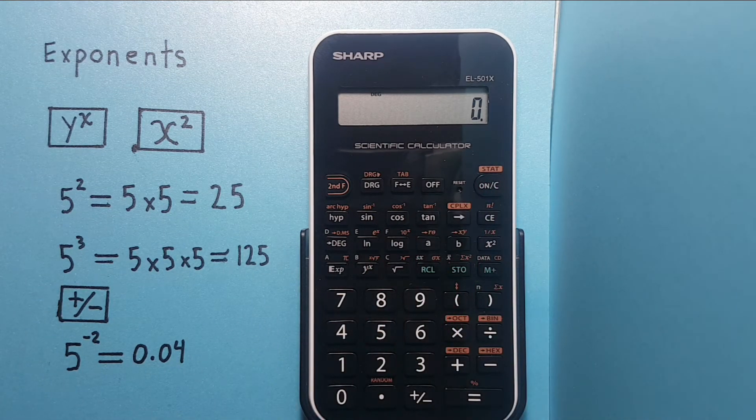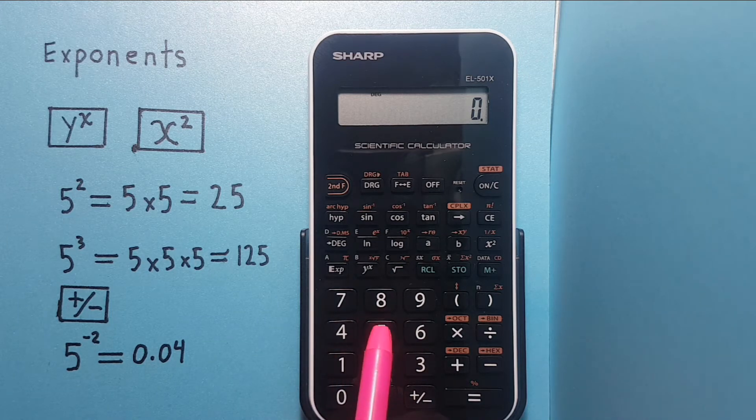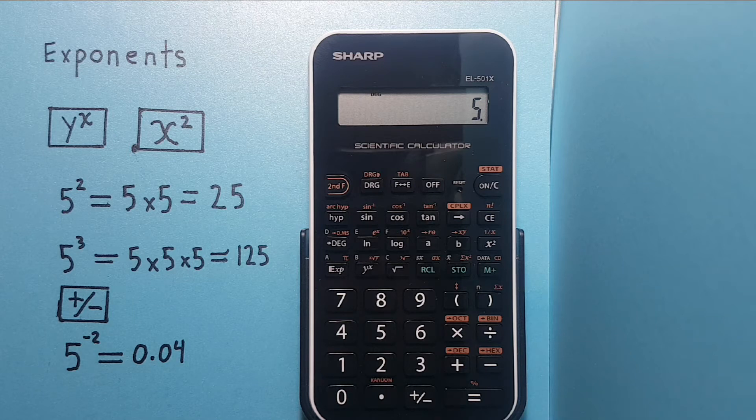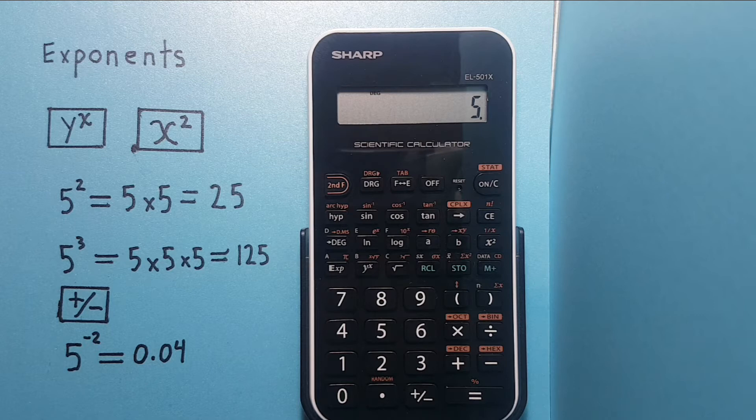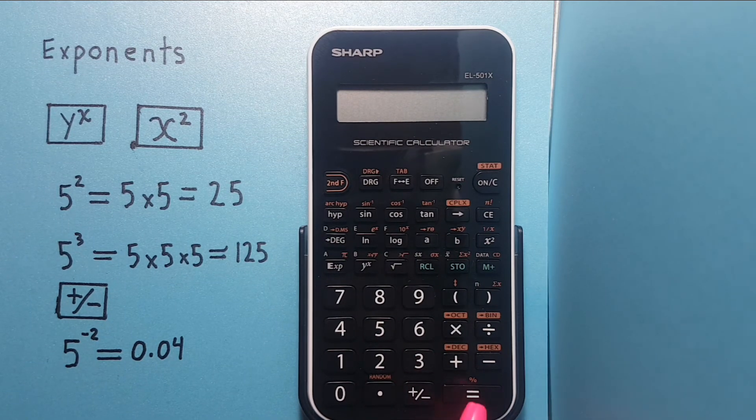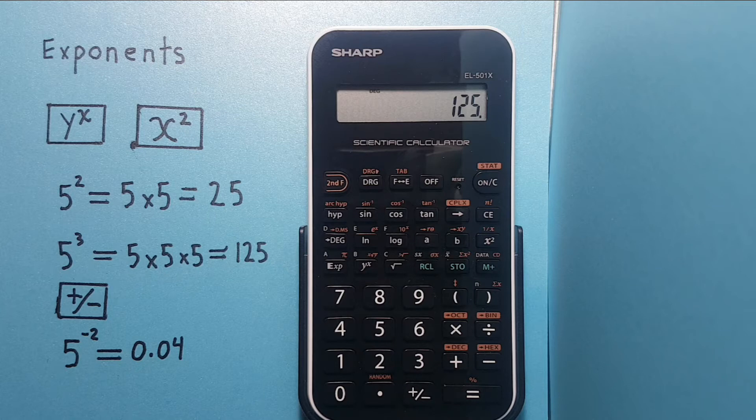If we wanted to do a different exponent, like let's say 5 to the power of 3, we could press 5 again, then use the y to the x button and then press 3 because that's our power, and equals. And there you see we get 125 which is correct.